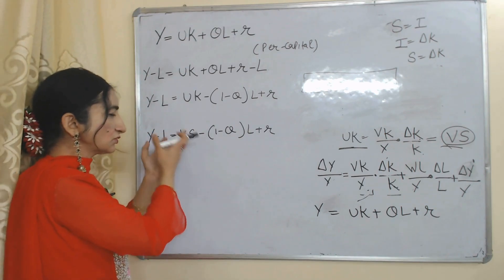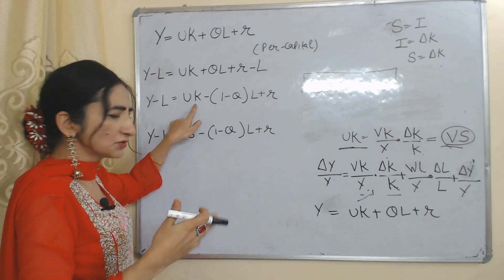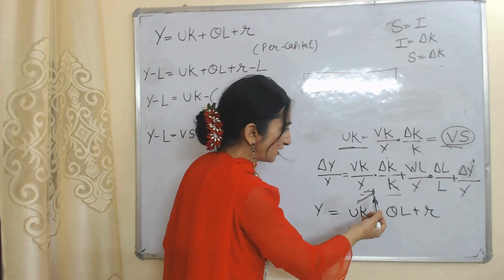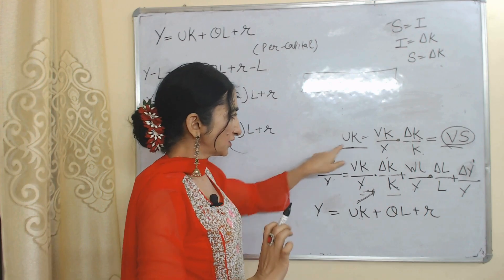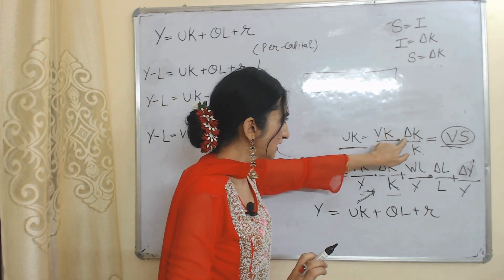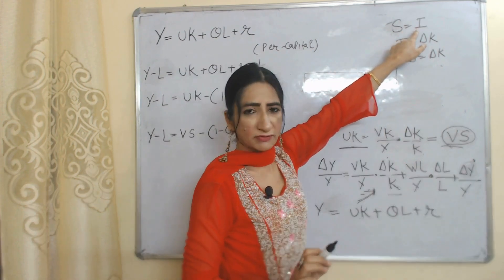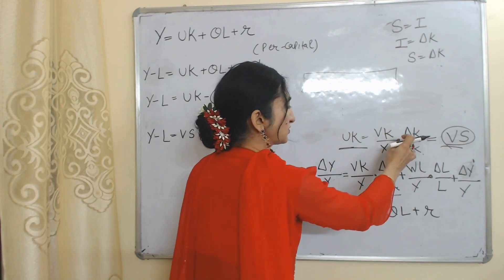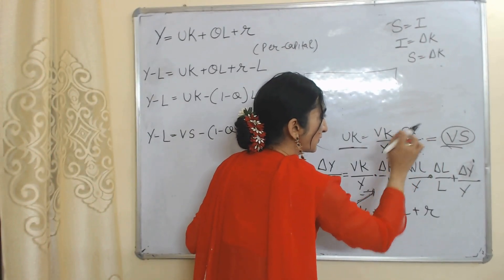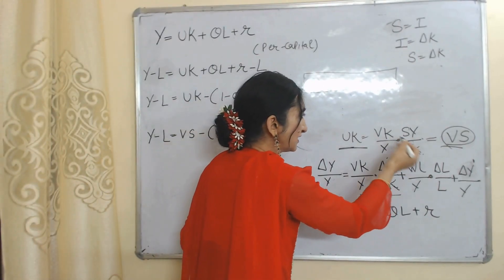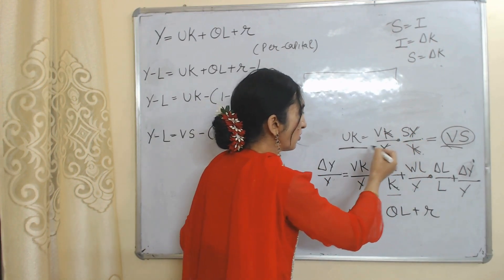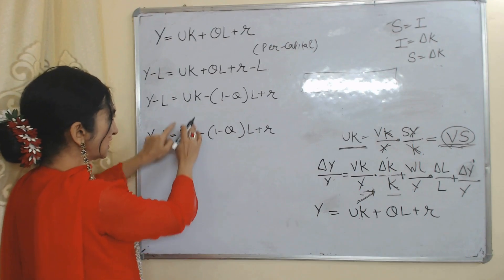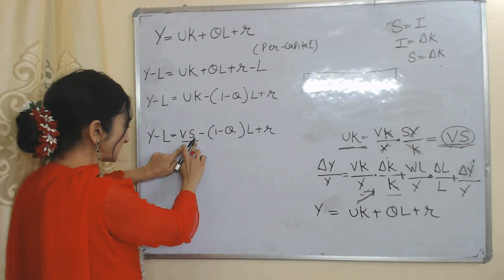Since saving is very important, we will now introduce saving into this equation by rewriting UK. We know UK = (VK/Y)·(ΔK/K). Since saving equals investment and investment equals ΔK, we can write saving = ΔK. Substituting, the K terms cancel and Y cancels as well, so UK becomes equal to V·S. Replacing UK with V·S, we have introduced saving into the equation.